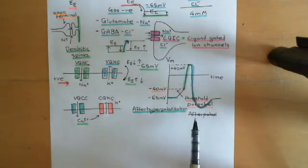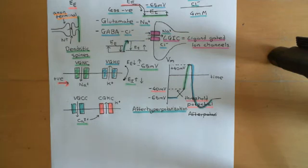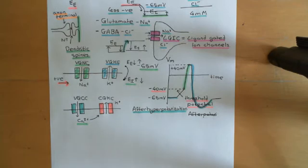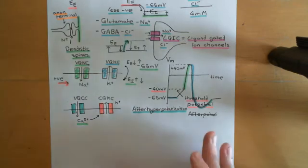That's the action potential occurring across a little patch of membrane — this elaborate alteration in the electrical potential difference across the cell membrane. But how does this actually propagate along an axon? After all, this is supposed to be sending a message from one side of the neuron to the other, so we need this disturbance to propagate.